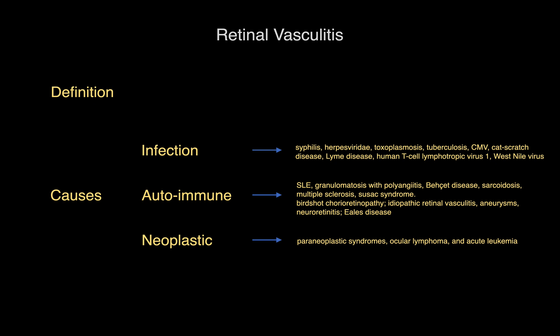Non-infectious retinal vasculitis can be associated with primary systemic vasculitis such as lupus, granulomatosis with polyangiitis, Behçet disease, or sarcoidosis. Other more rare conditions include multiple sclerosis and Susac syndrome.